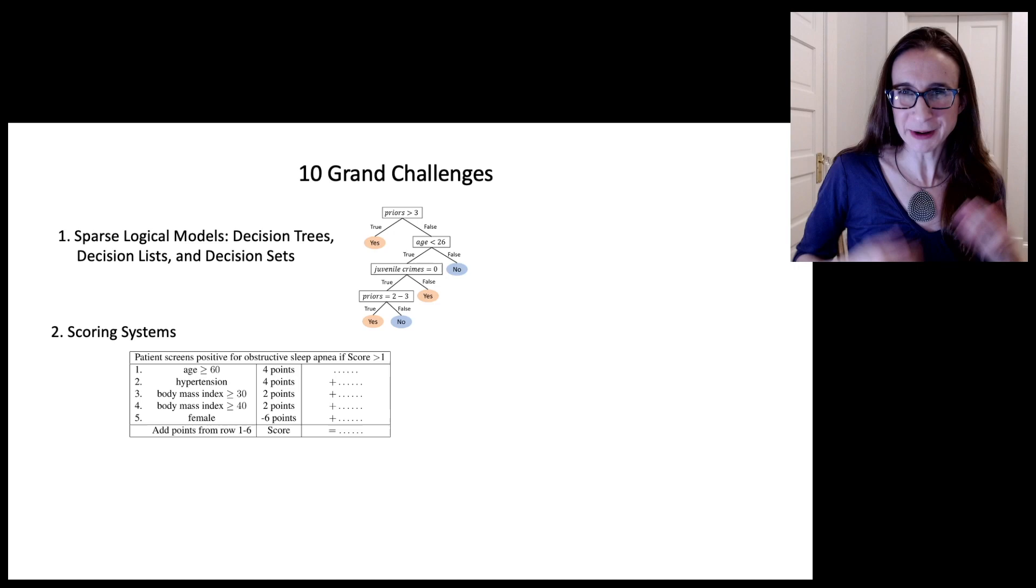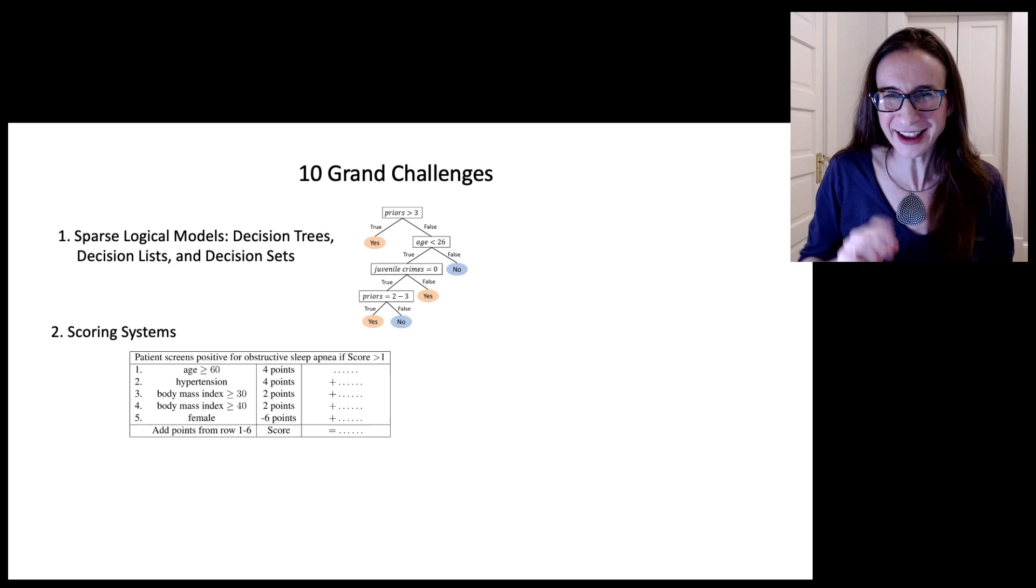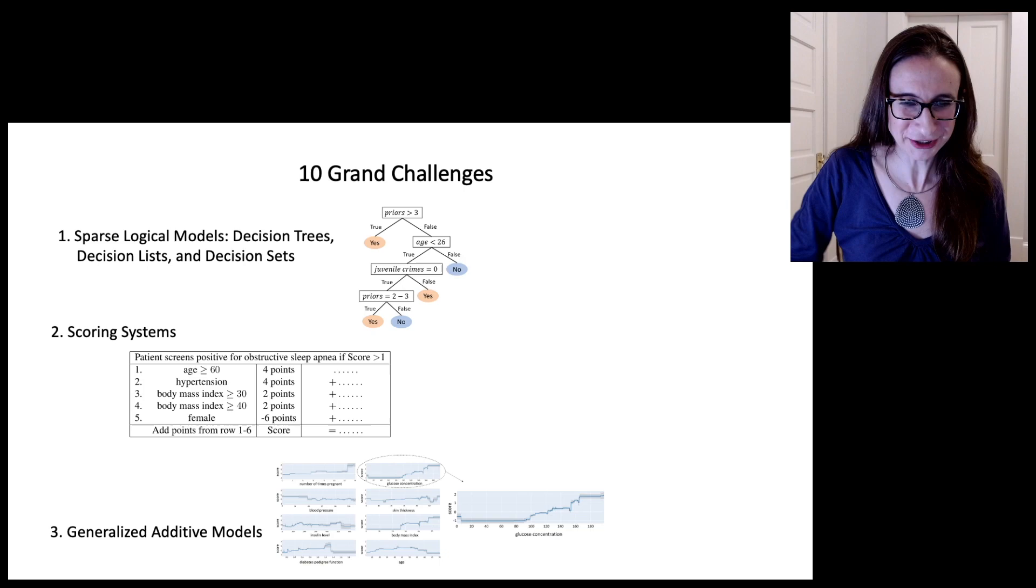And the second challenge area is scoring systems, which are very sparse linear models with integer coefficients, and these have been used in healthcare and criminal justice for 100 years. Not always designed using machine learning, but they have been used for 100 years.